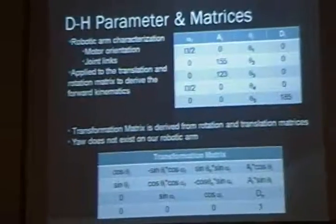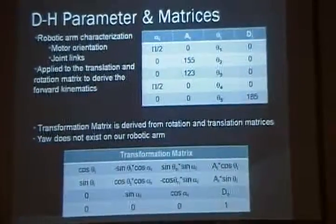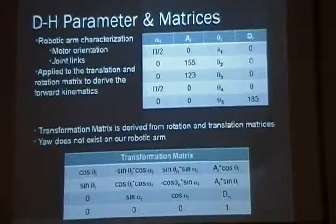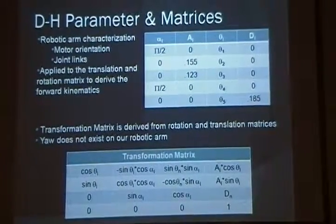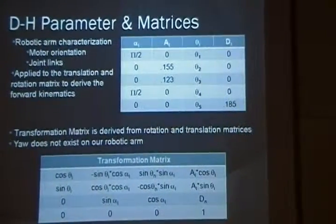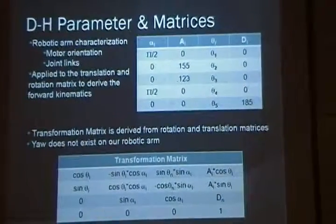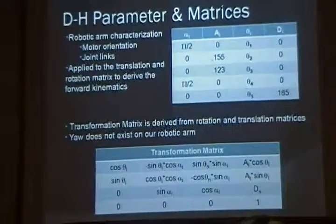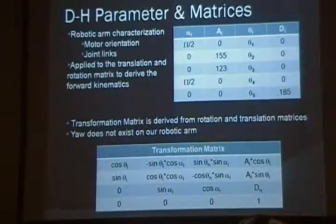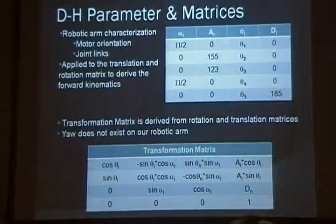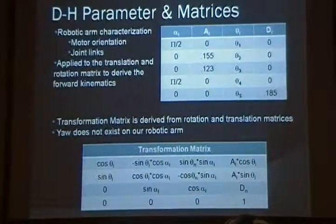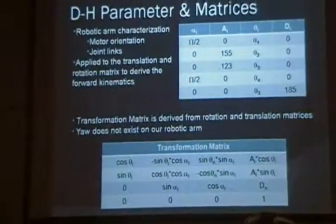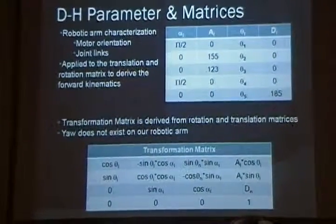To begin our derivation process, we had to characterize our arm based on its motor orientation and link length. And by characterizing our robotic arm, it's also known as the Denavit-Hartenberg parameters. By symbolically multiplying two translation and two rotation matrices, we get the transformation matrix, at which we then apply our DH parameters and get a specific set of forward kinematic equations.